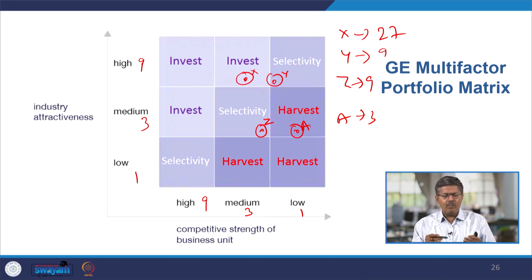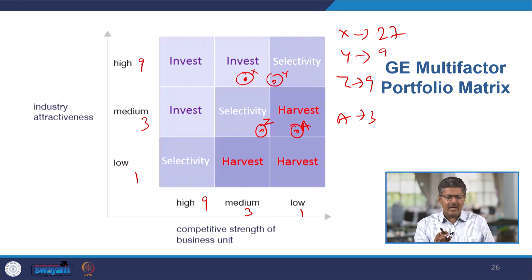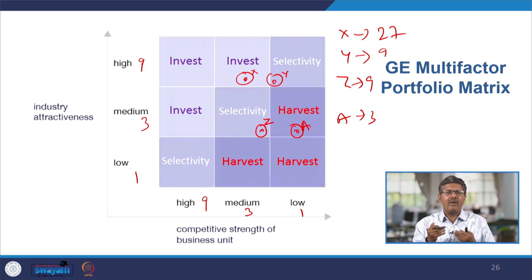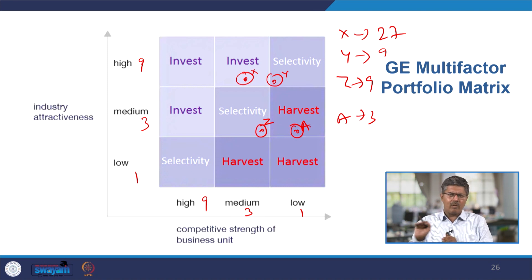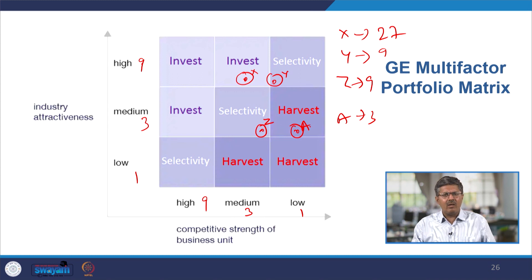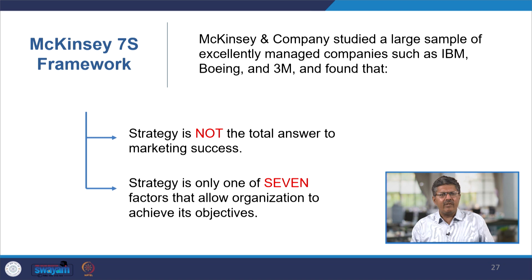If you look at this model, it is more elaborate and clear in explaining because it does not tell you exactly what to do - it gives you a position. The coordinates are very clearly explained, and through these coordinates and by looking at the subjective factors, management can decide whether to stay, allocate more resources, or come out of the business. Another important model widely used after the GE matrix model is the McKinsey 7S framework model.